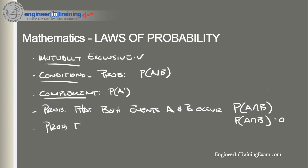The probability that events A or B occur is the probability of the union of A and B, written as P(A∪B). Now if the occurrence of event A changes the probability of event B, then events A and B are dependent. On the other hand, if the occurrence of event A does not change the probability of event B, then events A and B are independent.